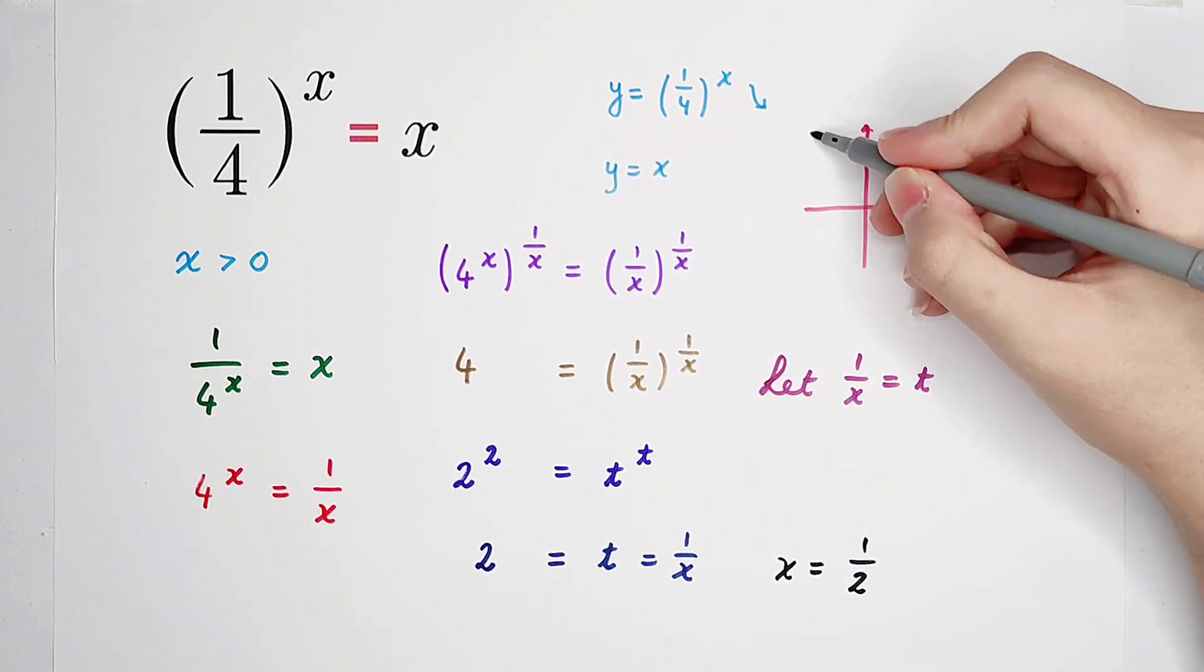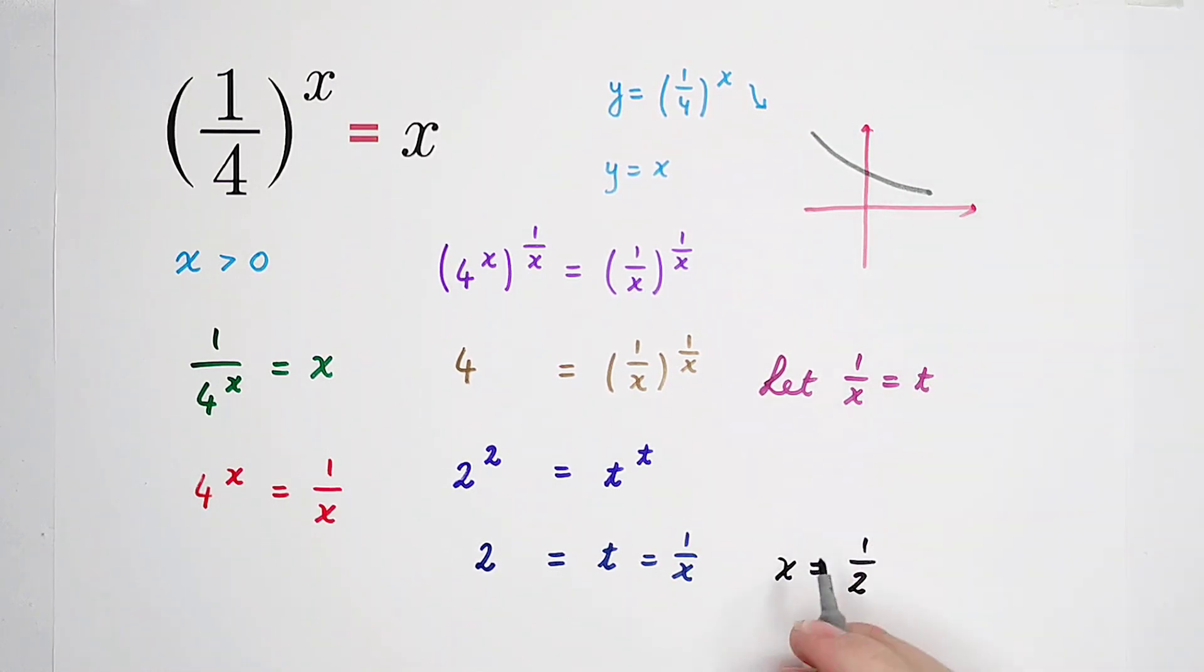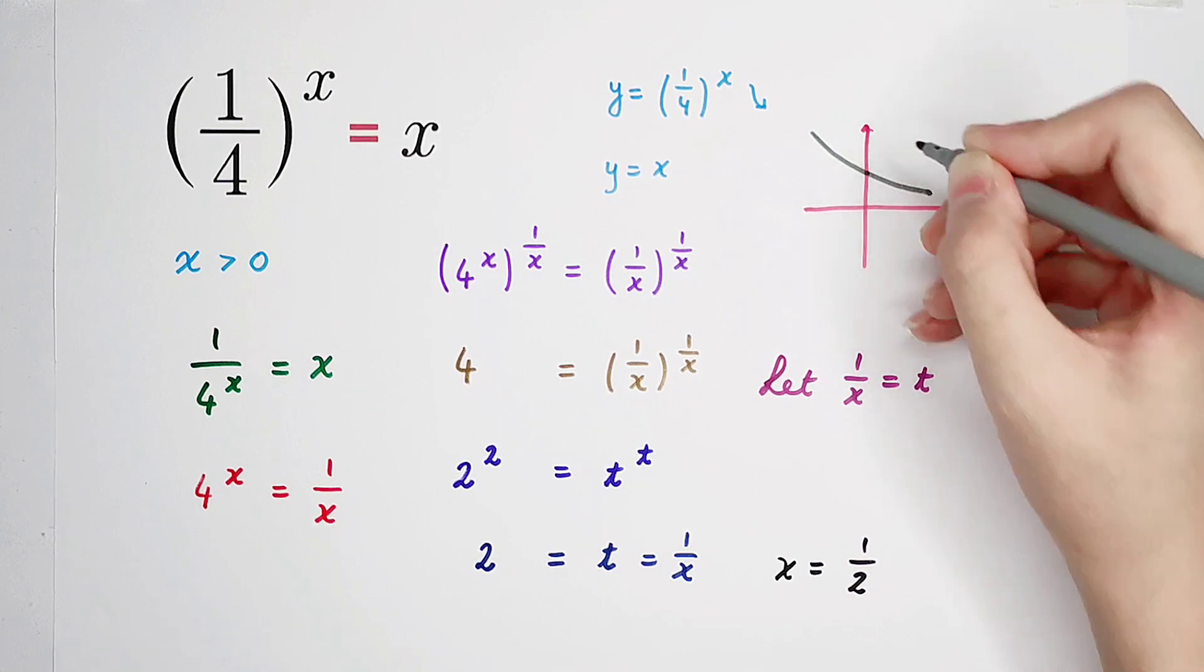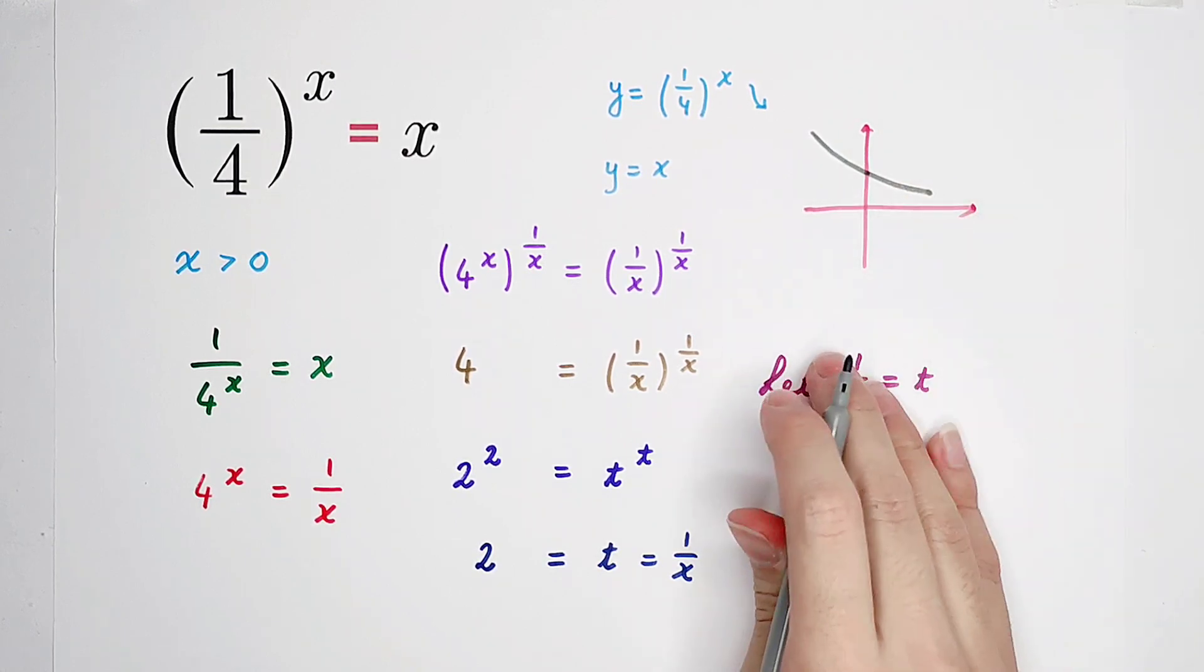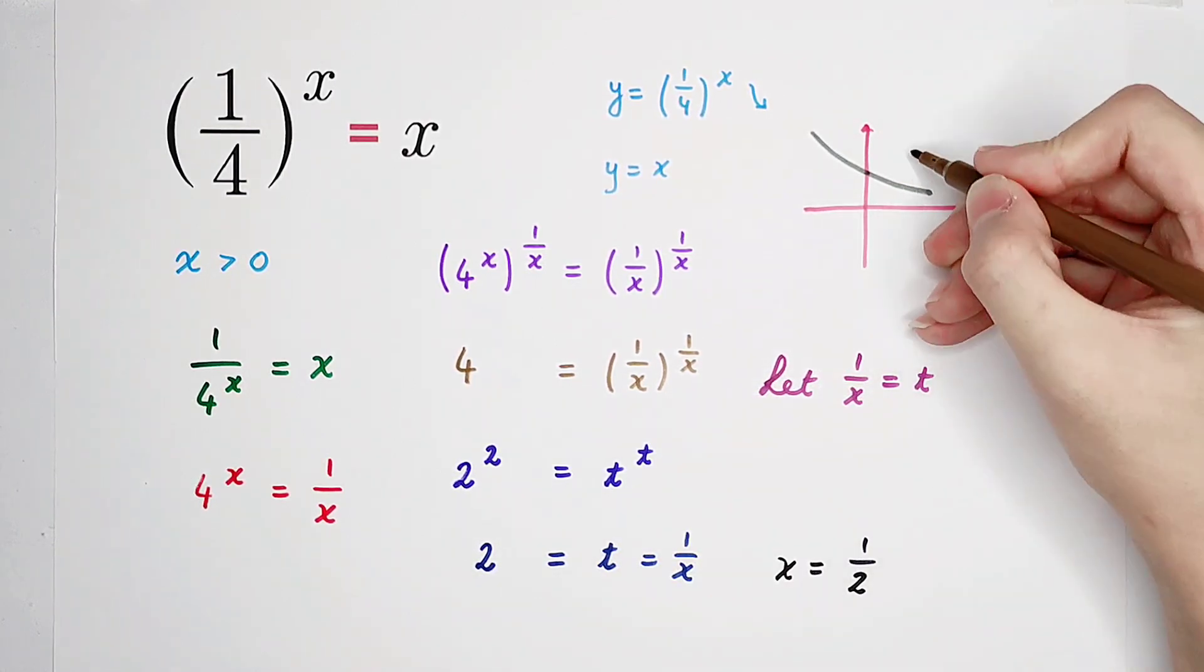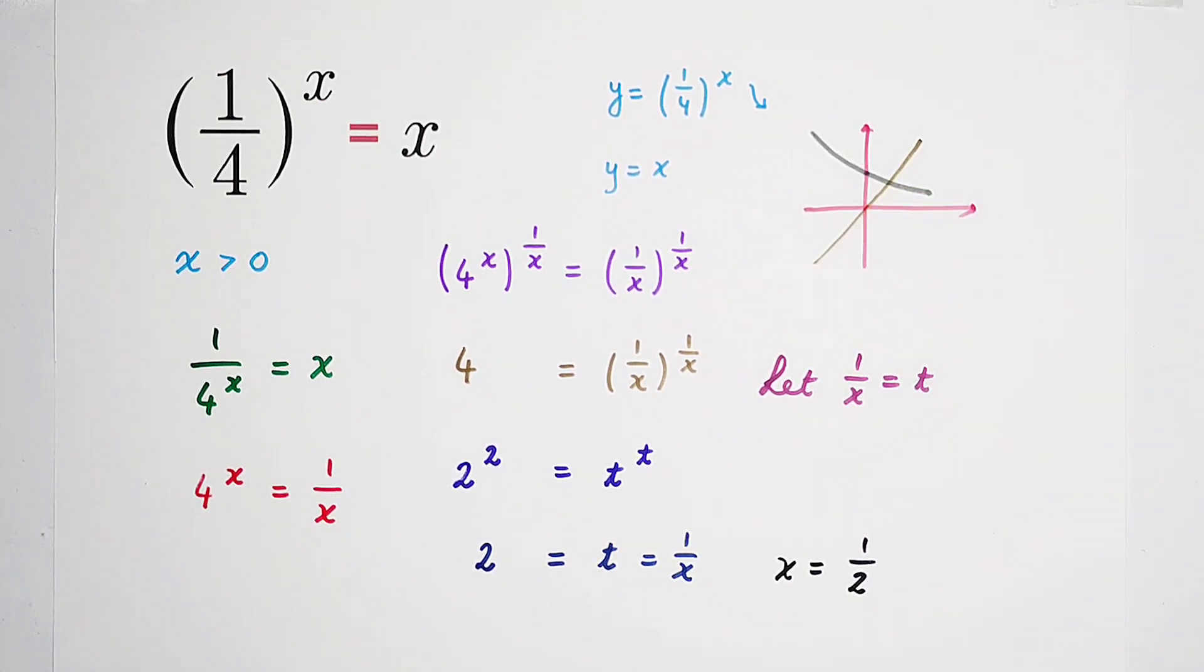And it's going to look like this. This point is zero, one. And here is y equals x.